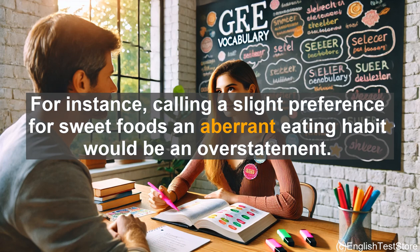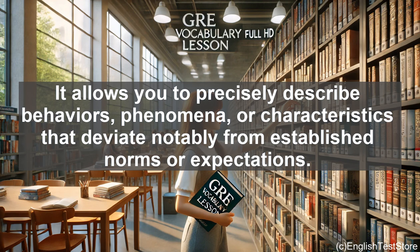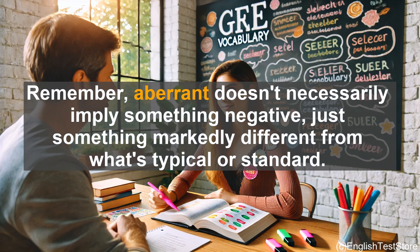Another error is using aberrant to describe minor deviations — the term typically implies a significant or marked departure from what's normal. For instance, calling a slight preference for sweet foods an aberrant eating habit would be an overstatement. Understanding and correctly using aberrant can significantly enhance your vocabulary for the GRE, allowing you to precisely describe behaviors or characteristics that deviate notably from established norms. Remember, aberrant doesn't necessarily imply something negative — just something markedly different from what's typical or standard.